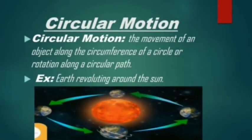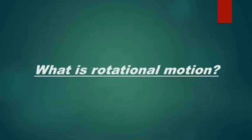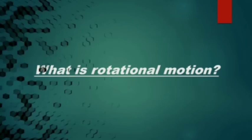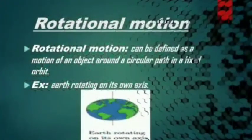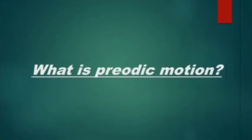For example, the earth revolving around the sun. What is rotational motion? Rotational motion can be defined as motion of an object around a circular path in a fixed orbit. For example, the earth rotating on its axis.